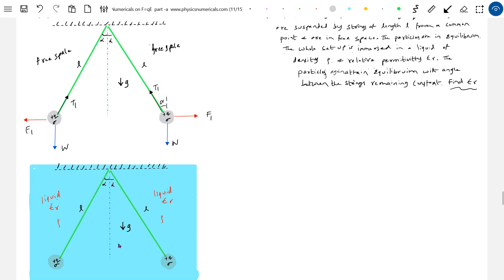Looking at this diagram, what we can write is T1 sine alpha equals F1, T1 cosine alpha equals W. So tan alpha equals F1 by W. That is from the first case.